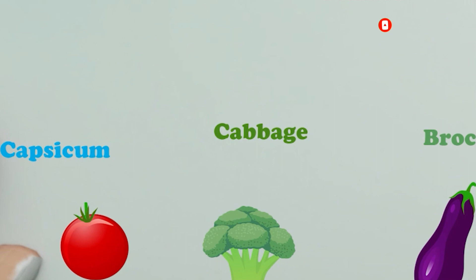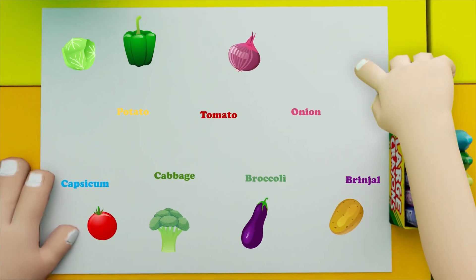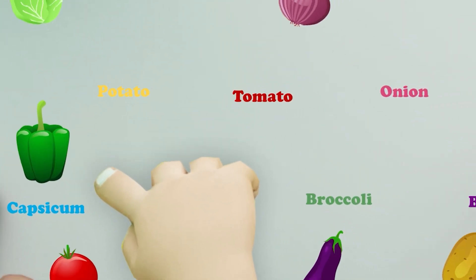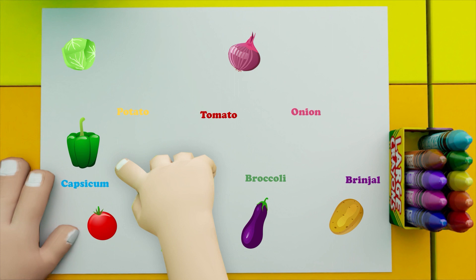So let's start with capsicum, number one. Where is the capsicum? This is green, it's called capsicum. So let's match the capsicum.